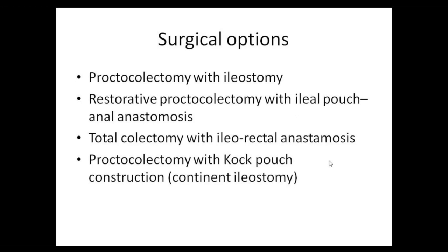Four important surgical options in ulcerative colitis must be remembered. Previously, the standard was total proctocolectomy — total removal of the colon and rectum up to the pelvic floor. This included total proctocolectomy with end ileostomy and total proctocolectomy with a continent ileostomy (Kock pouch), wherein an artificial valve was created before the ileostomy. However, the complication rates of this valve mechanism were high.